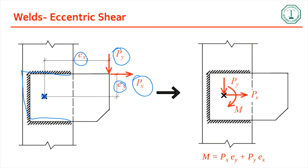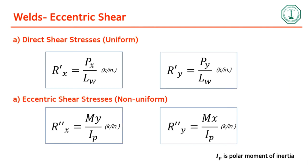What we do is transfer Py to the centroid making it a direct shear. Similarly, Px is transferred to the centroid, and we have a resulting moment M equal to Px·ey plus Py·ex.